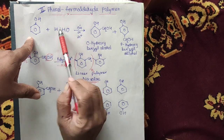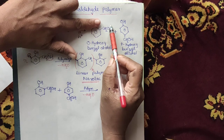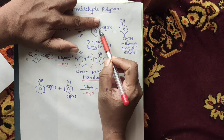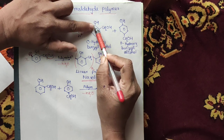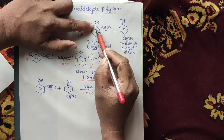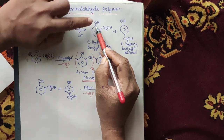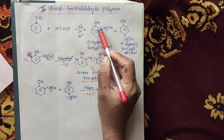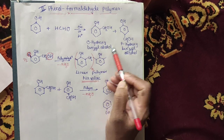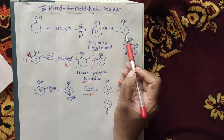In the presence of acid or base, the reaction forms ortho-hydroxy benzyl alcohol. The benzyl alcohol part refers to this compound, and the OH group is on the ortho position — the adjacent carbon to the main group on the benzene ring. Therefore, this product is called ortho-hydroxy benzyl alcohol.